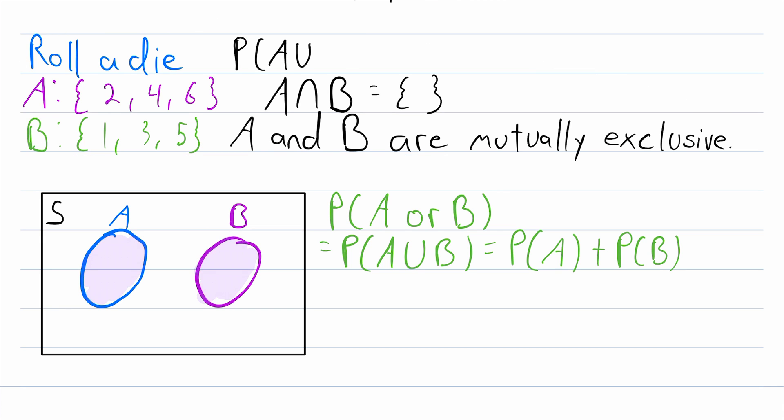what is the probability of A union B? A is the event that the dice roll is even. That is a probability of one half. So that is our probability of A. Then we need to add the probability of B. What's the probability of B? Well, it's the probability that we roll an odd number, which is also one half. So in this case, the probability of A union B is equal to one.